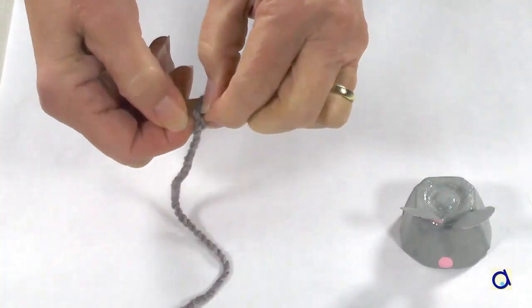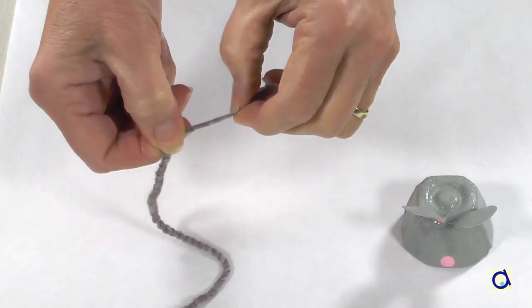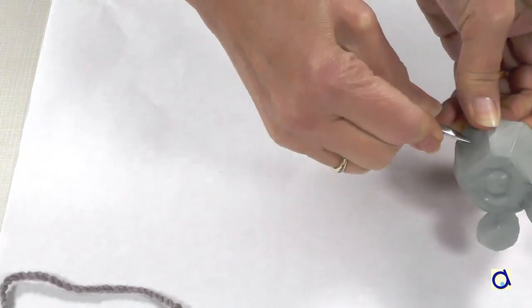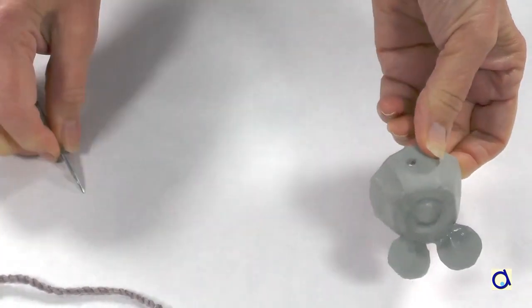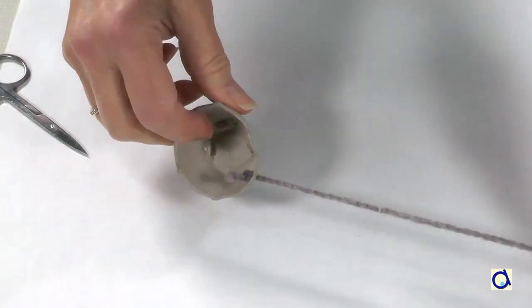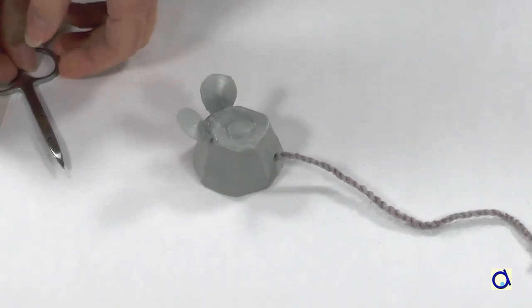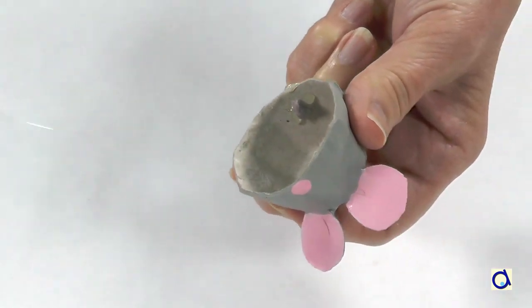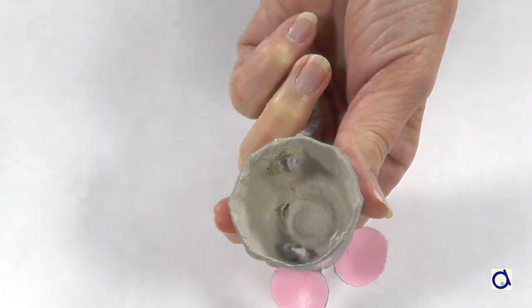To make the tail of the mouse, take a piece of grey wool and tie a double knot at one end. Cut a hole in the back of the mouse with small sharp scissors. Thread the piece of wool through the hole from the inside and put a dot of hot glue on the knot inside the mouse. This will hold the tail in place.